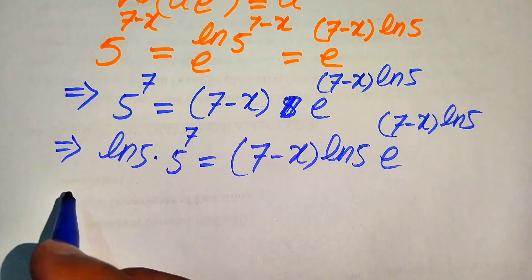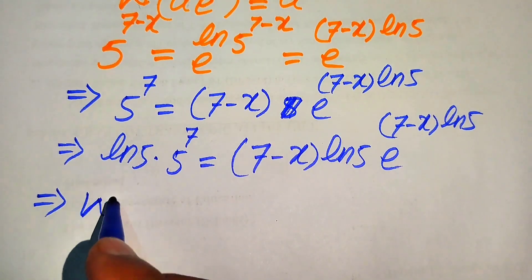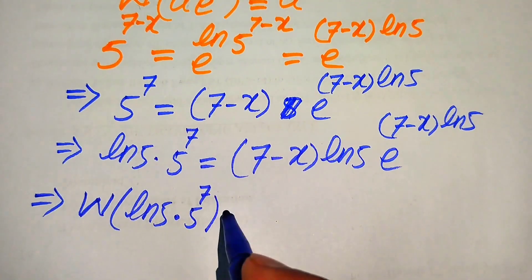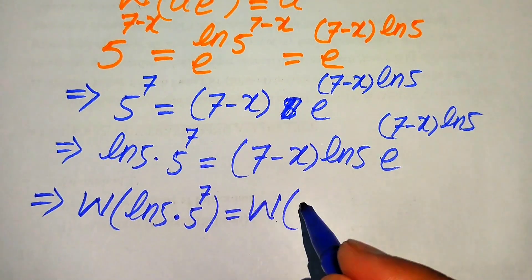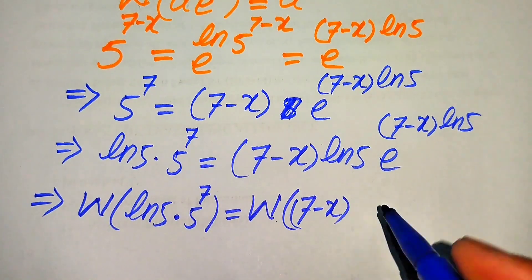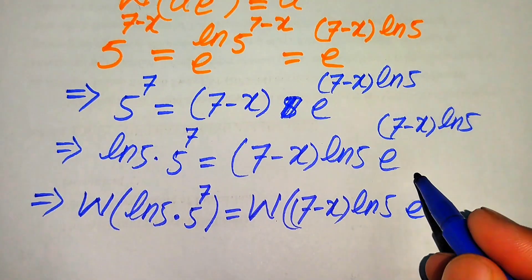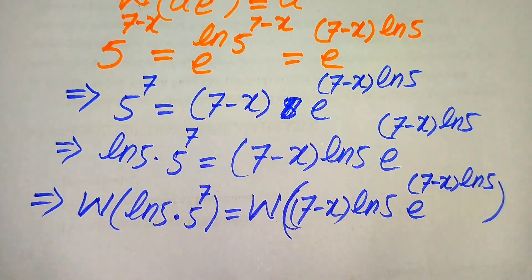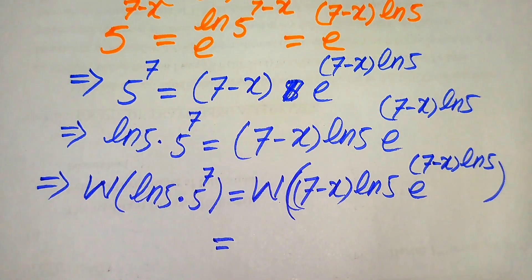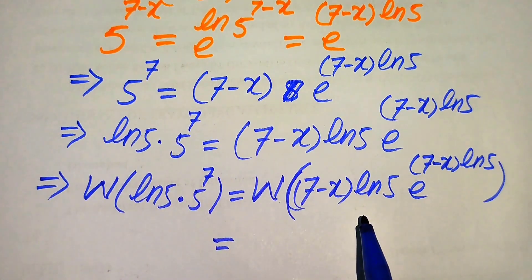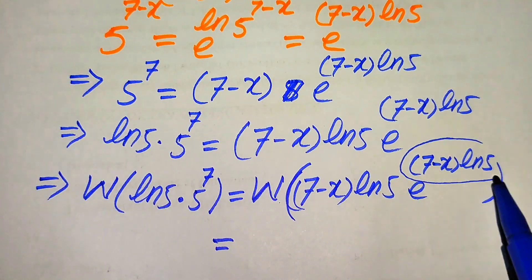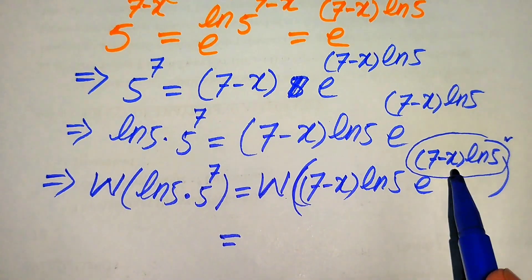According to the Lambert W function, we apply W to both sides. This is written as W of log 5 times 5 to the power of 7 is equals to W of 7 minus x times log 5 times e to the power of 7 minus x times log 5. When we apply the definition of the Lambert W function on the right hand side, the output is the exponent of e only, which is 7 minus x times log 5.